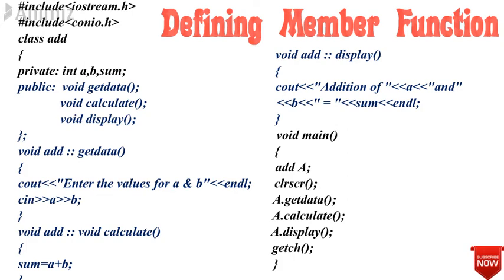Each member function has to be defined one after another. Defining a member function outside the class is considered good practice because it allows us to secure our data members and member functions for security purposes. Here we show only the essential features and hide the background details by the concept of abstraction. The member functions defined outside the class can be called using an object in the main function.